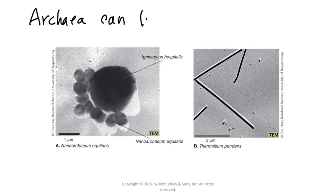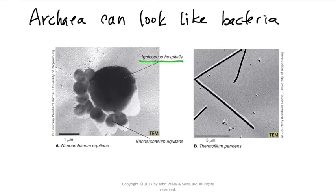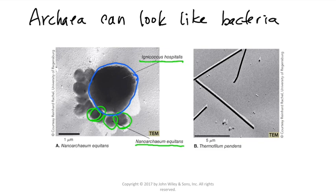Some archaea look a lot like bacteria in shapes and sizes. In the image on the left, we have two types of archaea: Ignicoccus hospitalis and Nanoarchaeum equitans. You can see that both of these are sort of cocci-shaped — they're more round, but very different in size. The Nanoarchaeum are the small circles, and you can see that Ignicoccus is much, much bigger. In the image on the right, we are looking at Thermophilum pendens, and it is sort of rod-shaped like a bacillus, only it's very, very thin and very, very long.